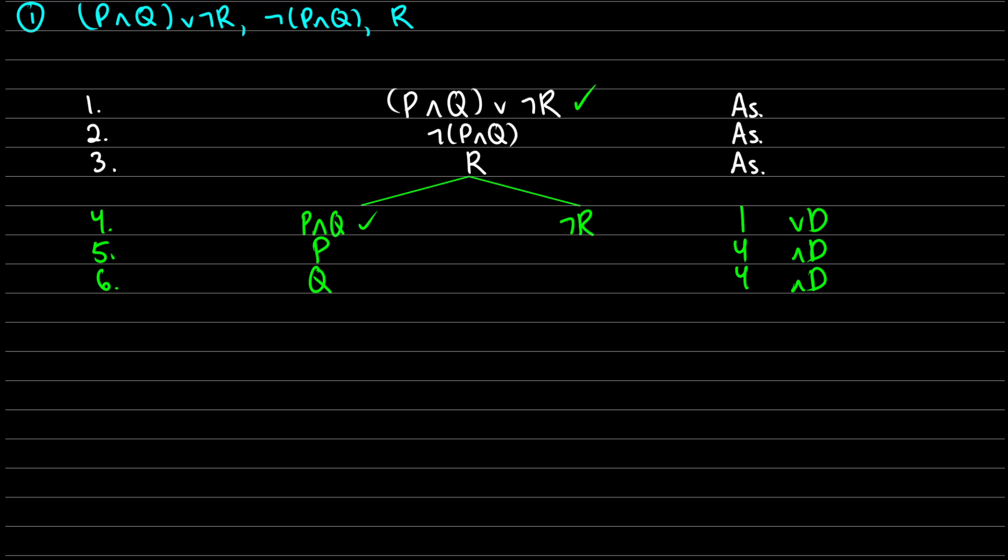Now on the right side what do we notice? We have R, we have ¬R. So we have a contradiction on that right branch, so we can close it right off the bat. So now we don't have to branch that one out anymore. We just have to deal with our leftmost branch. Now what do I see? In line two I have a complex with ¬(P∧Q), so we need to deal with this. Now when is ¬(P∧Q) true?